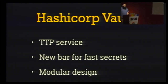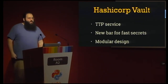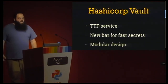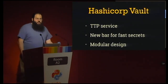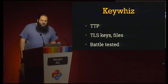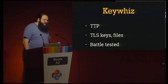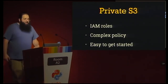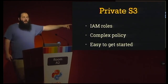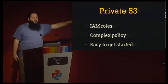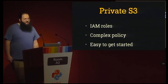HashiCorp Vault is a dedicated secrets management platform making waves in the secrets world. It supports audit trails, granular ACLs, modular storage backends, and a best-of-breed auto-rotation system for fast secrets. Square's KeyWiz is slightly older but very solid — more limited data model but more battle-tested. It excels at managing key-type secrets and whole files. For AWS users, a simple starting point is a private S3 bucket with IAM policies using IAM roles to control access alongside S3 or DynamoDB.